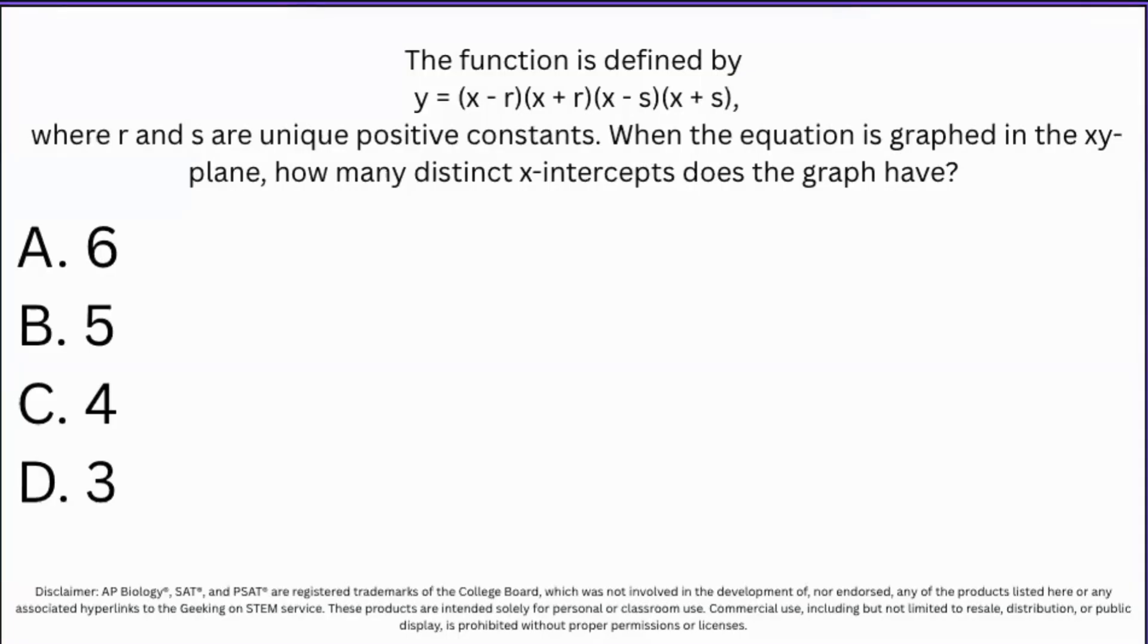Let's go ahead and tackle this problem together. They let you know in this problem that there is a function defined by y equals (x-r)(x+r)(x-s)(x+s), where r and s are unique positive constants. So they want to let you know how many distinct x-intercepts are in the graph above.